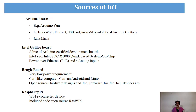The different sources of IoT: Arduino boards include Wi-Fi, Ethernet, USB ports, micro SD card slots, and three preset buttons running on Linux. Intel Galileo is a certified Arduino development board with Intel Quark SoC, Power over Ethernet, and 6 analog inputs. The BeagleBone board has very low power requirements, looks like a card, and can run any Android or Linux — it is open source hardware and software for IoT devices. Raspberry Pi is a Wi-Fi connected device which includes open source software.